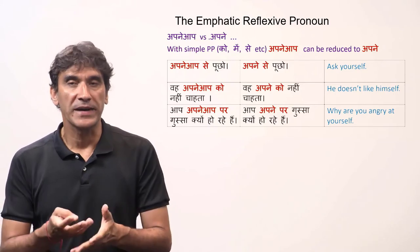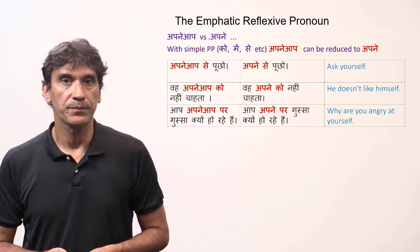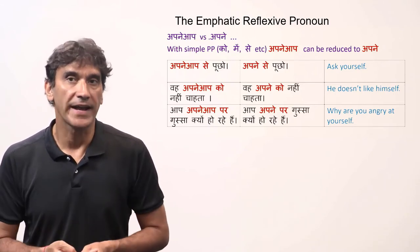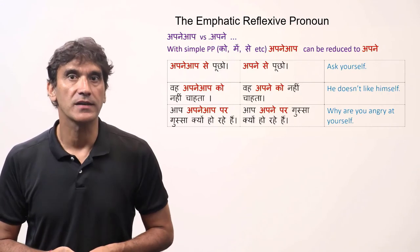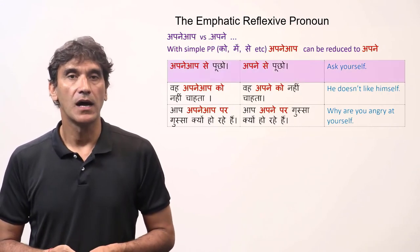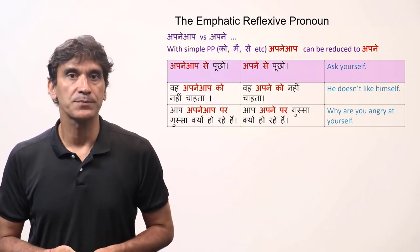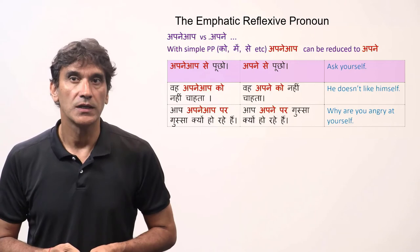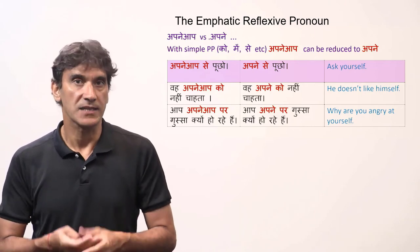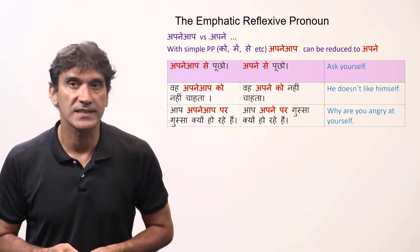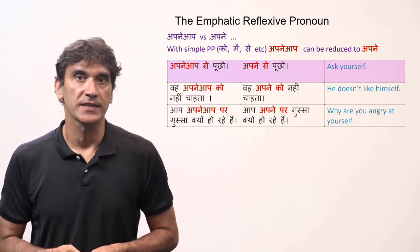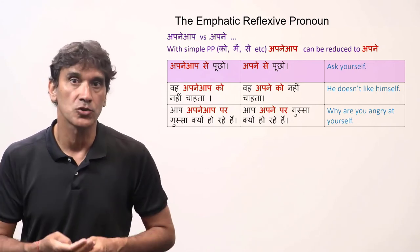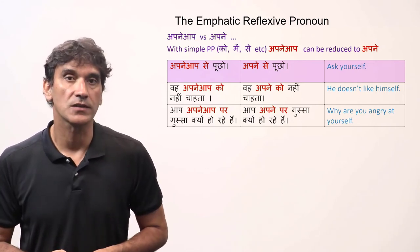'Apne aap' can be reduced to 'apne'; both the short and long versions are correct. For example: 'Ask yourself' — apne aap se poochho, or apne se poochho. The verb 'ask' (poochna) takes the postposition 'se,' so you say apne aap se poochho or apne se poochho.